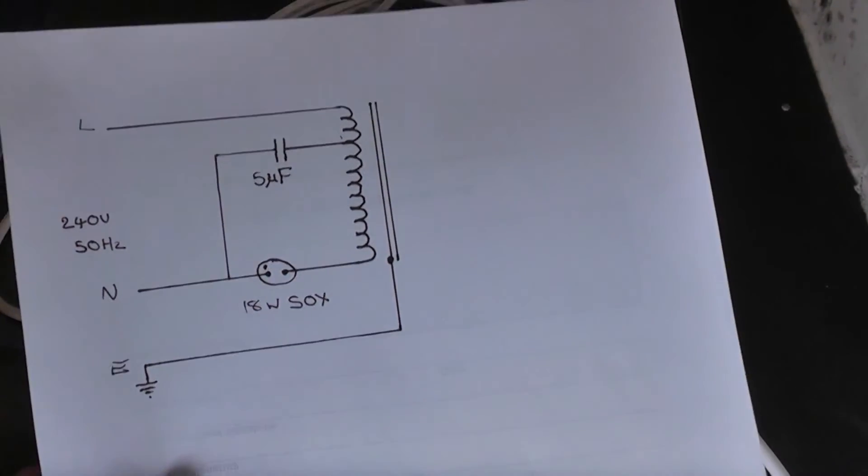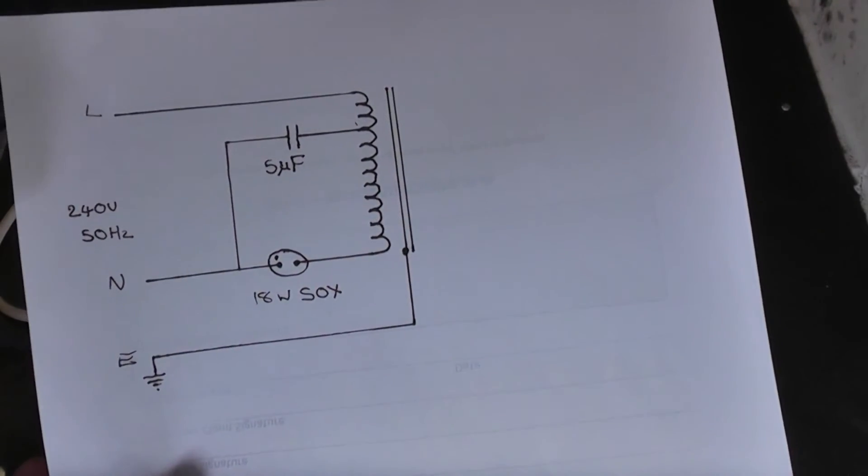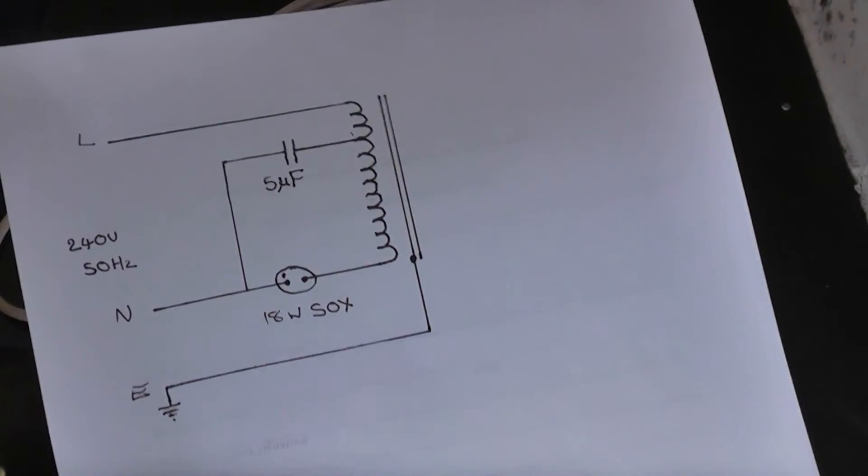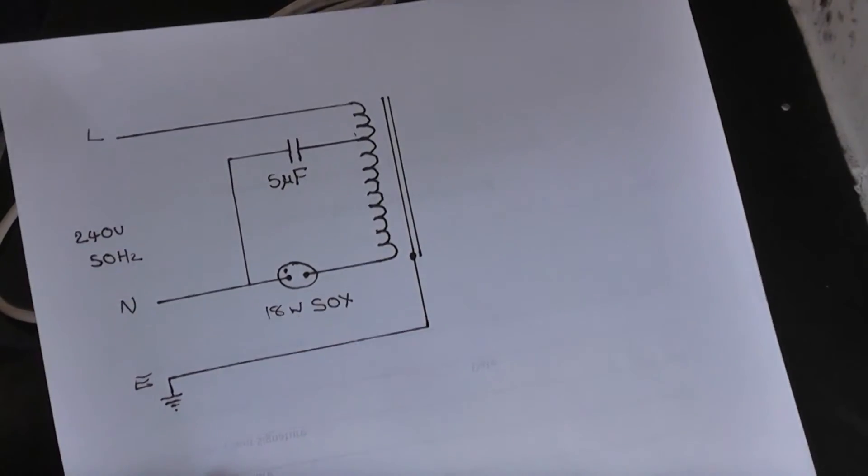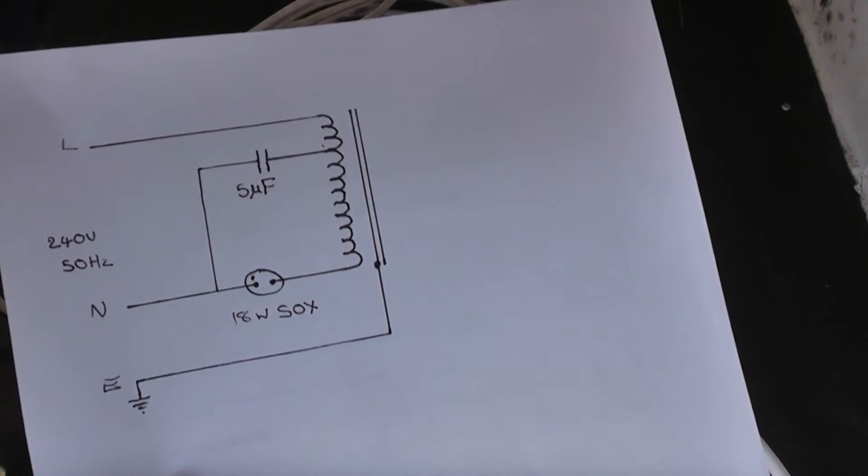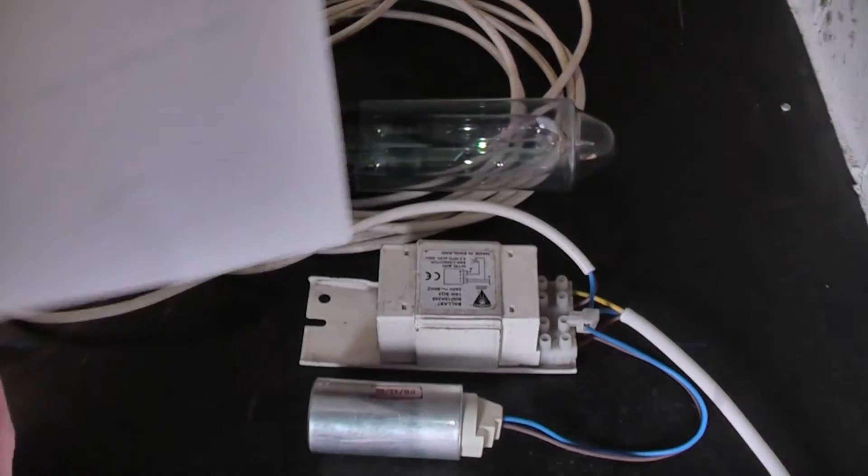That's how I think it works anyway. I'm not an expert but it's from what research I've gathered. So it operates on, this ballast is a 240 volt 50 hertz ballast. If these lamps are used in other countries I presume they would have a correct ballast or a different sort of ignition system to operate them but I don't know. But we'll switch it on.